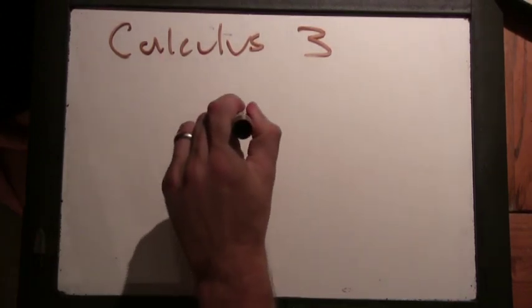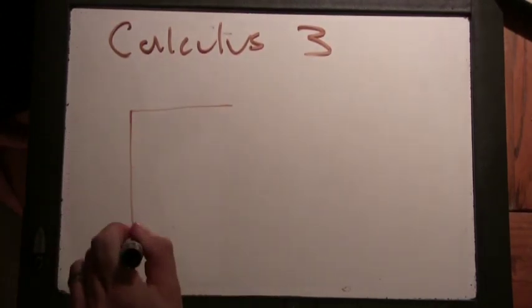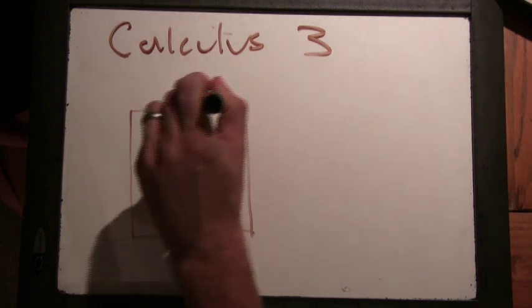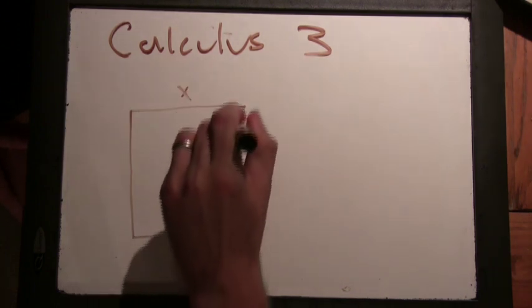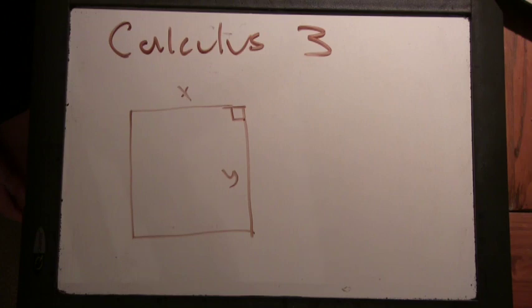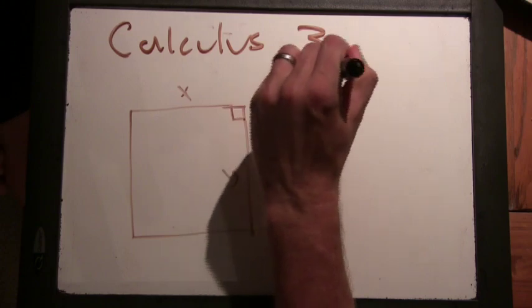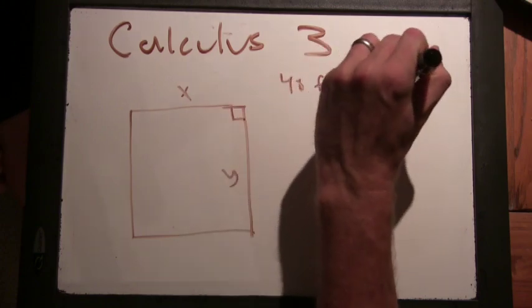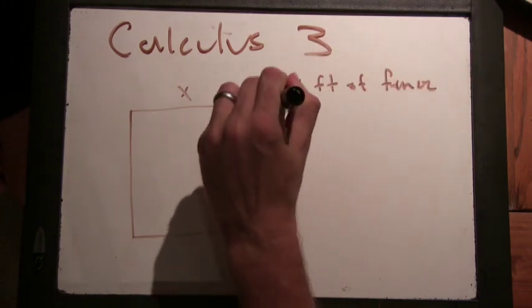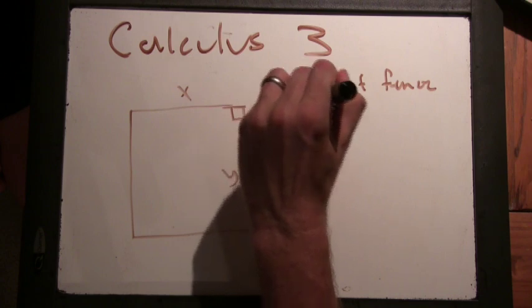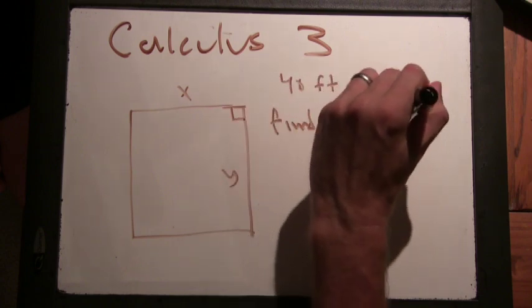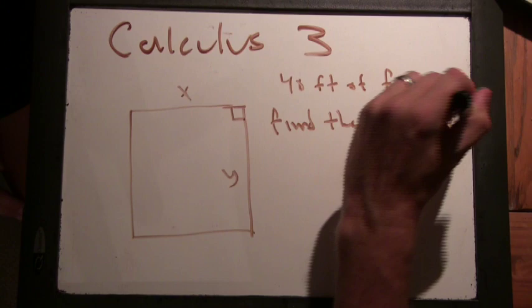So here's the next problem. You want to build a rectangular fence. Let's say you have 40 feet of fence. Find the maximum area.